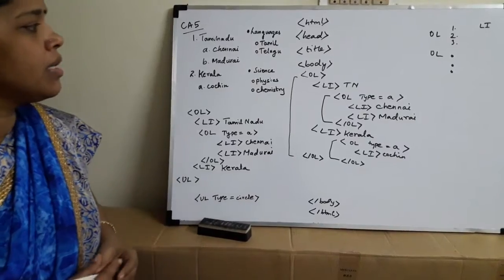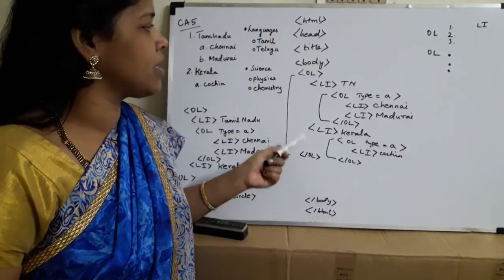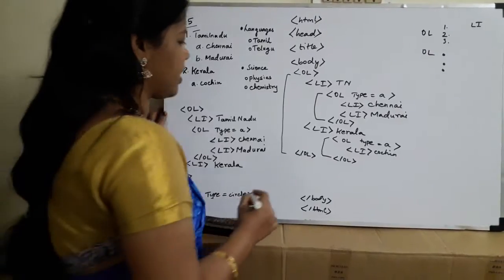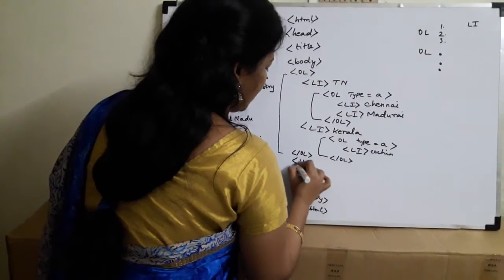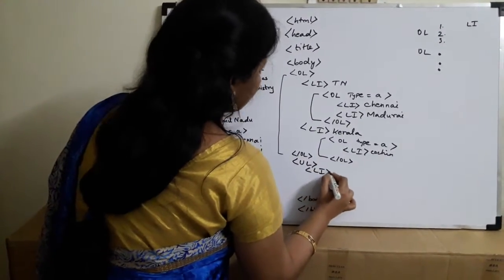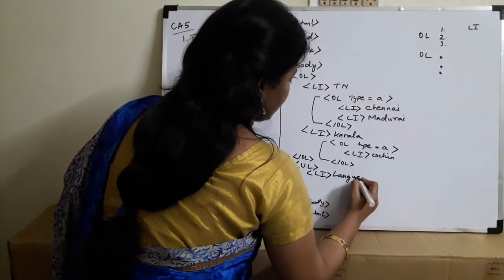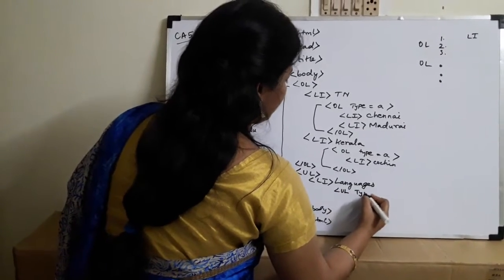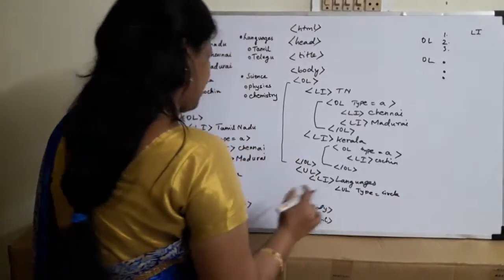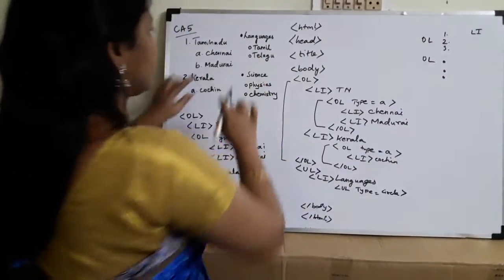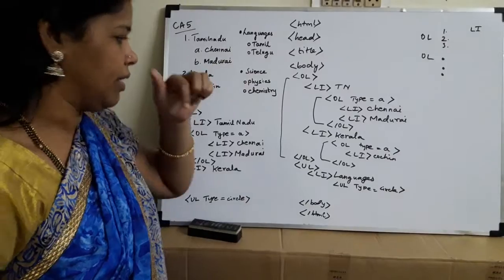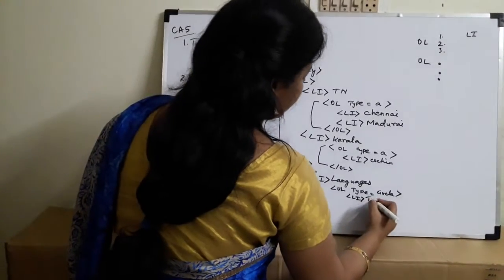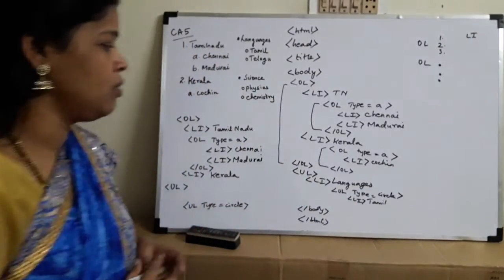Now coming to the second part, which uses symbols — this is called an unordered list. For an unordered list, instead of OL you use the tag UL. The first LI is 'Languages.' Within that LI, I create another UL with type equal to circle. Circle means a hollow circle bullet. Inside that, Tamil is one list item and Telugu is another list item, both displayed with a circle bullet.